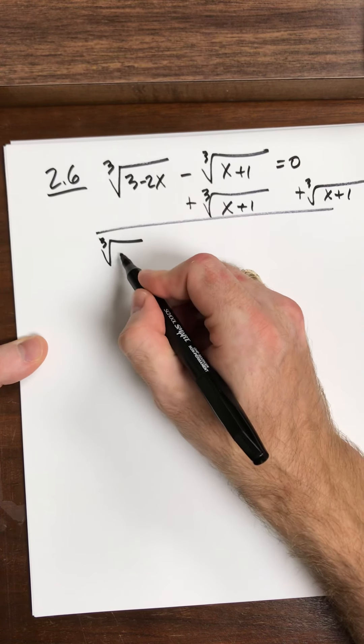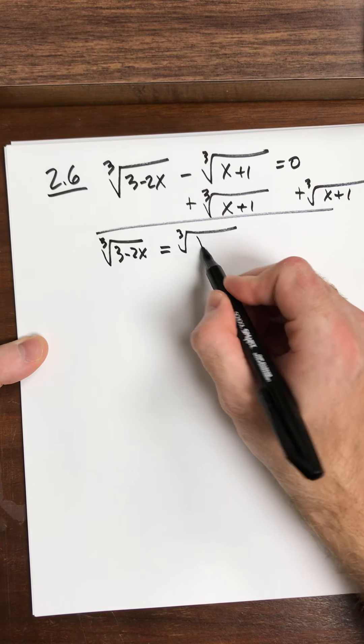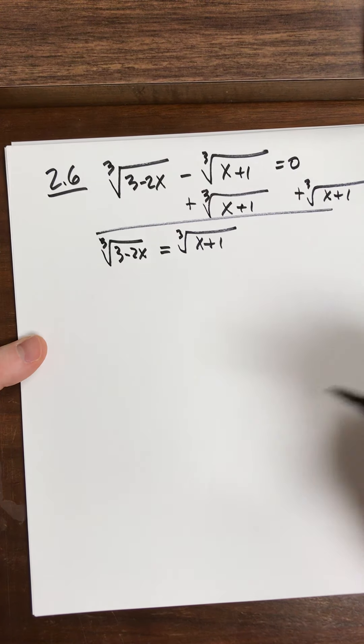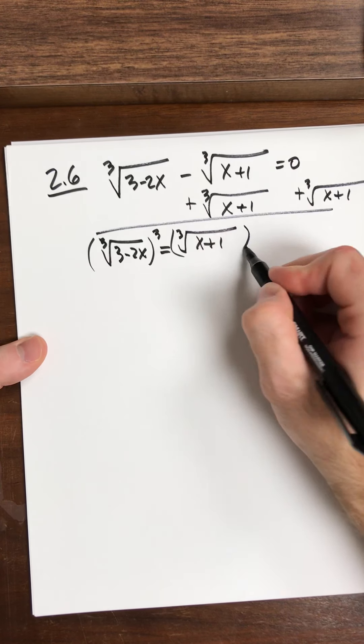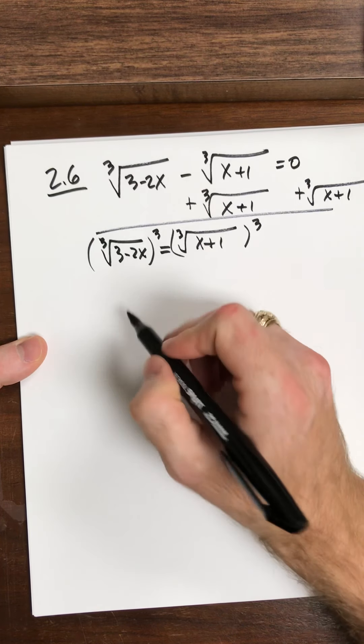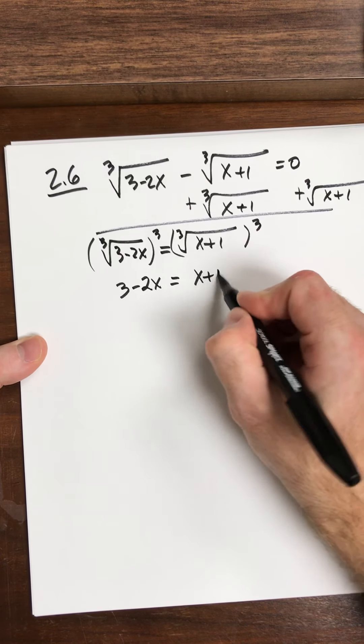I've got cube root of 3 minus 2x equals the cube root of x plus 1. Now, how do I get rid of the radical? I cube both sides. So when I cube it, it undoes it, so all I'm left with is 3 minus 2x equals x plus 1.